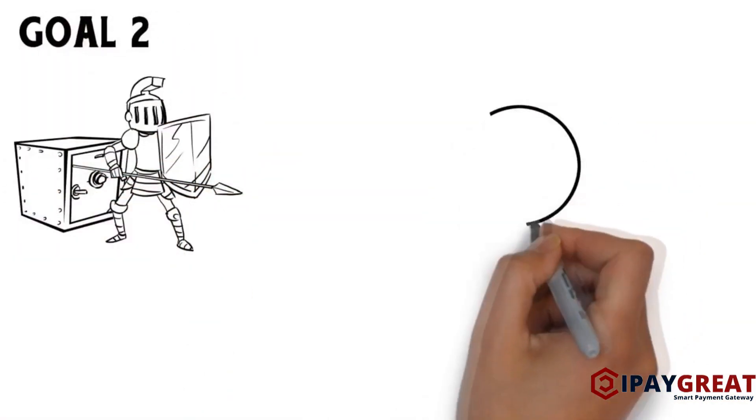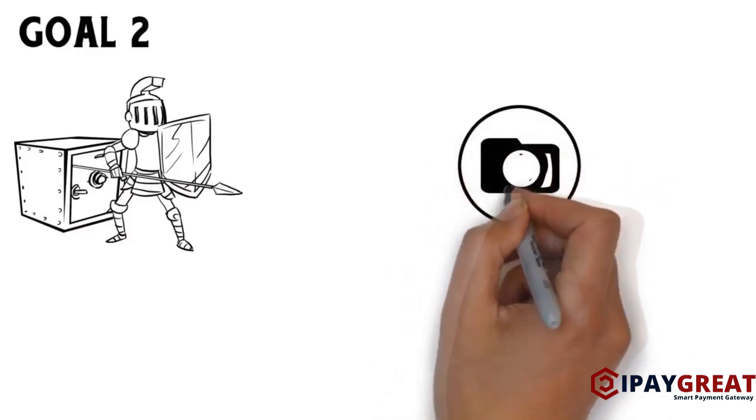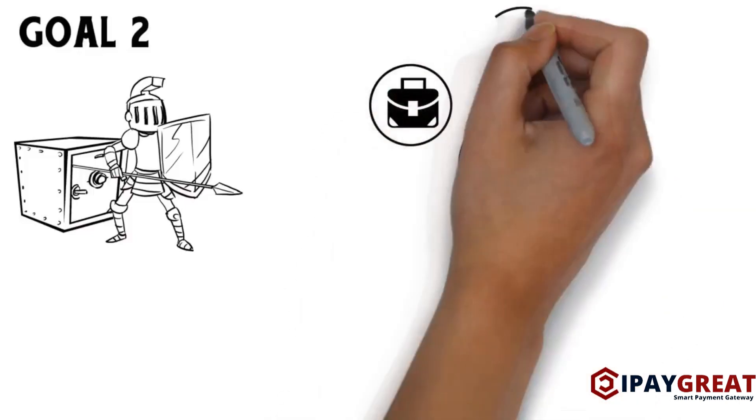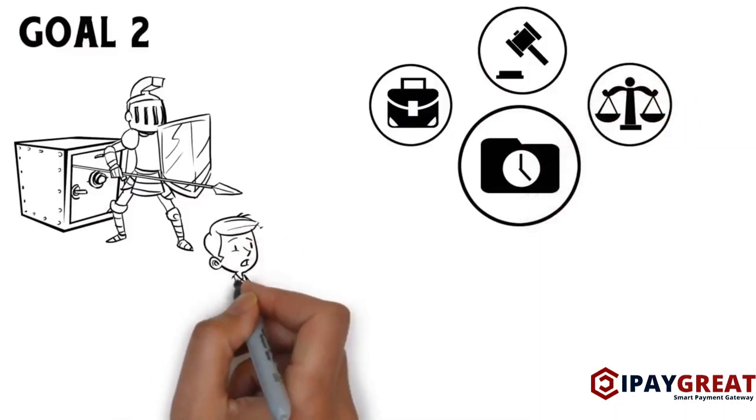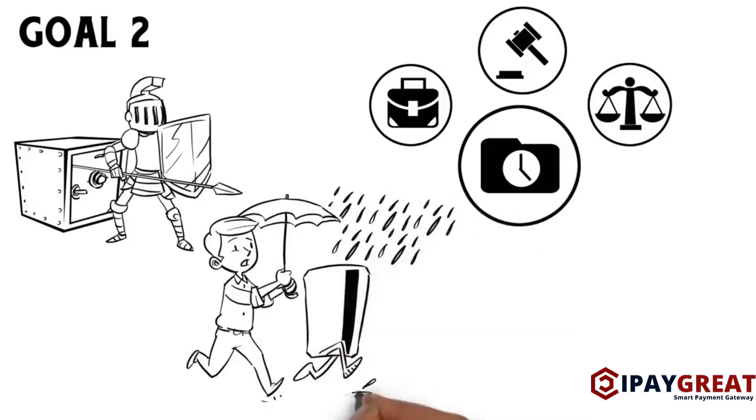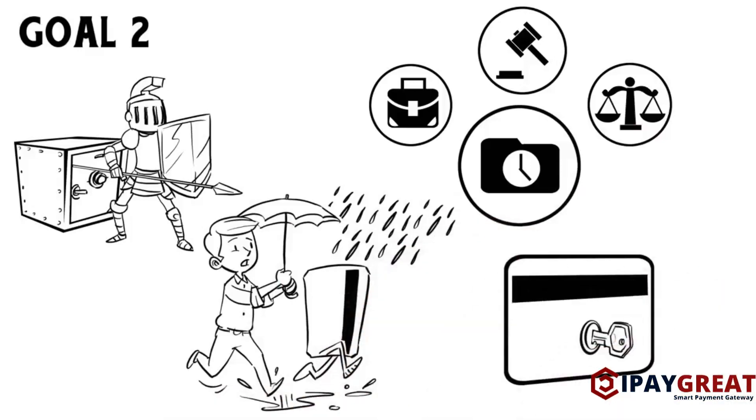Goal 2: Protect cardholder data. Limit cardholder data storage and retention time to that required for business, legal and or regulatory purposes. Protect cardholder data in transit and at rest via the use of adequate encryption practices.